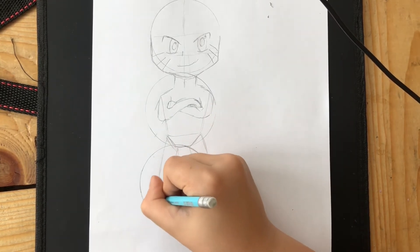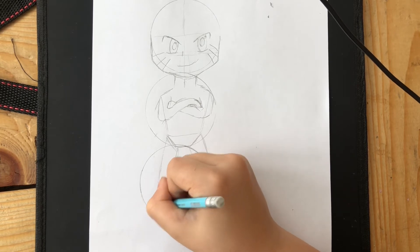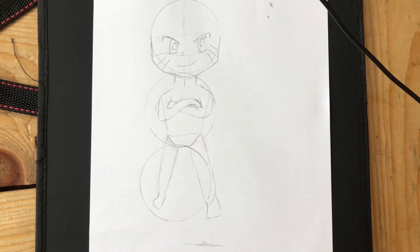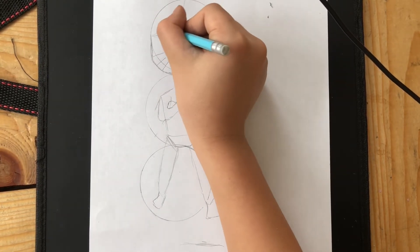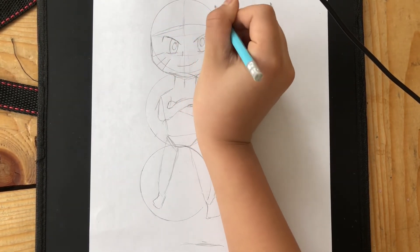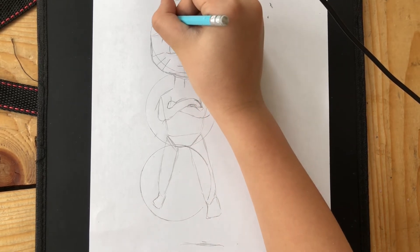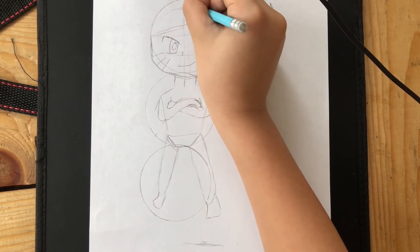Then you can draw his feet, which are super simple. Then you can draw the hair and the cosmetics and stuff. If you're not drawing Naruto, you can skip it to the hair part.